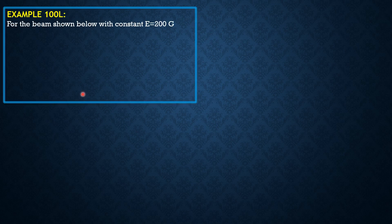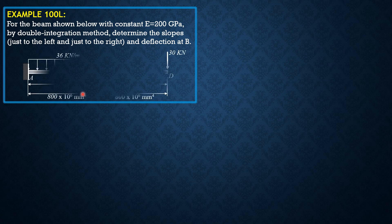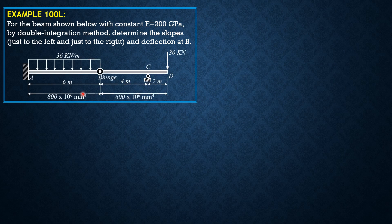For the beam shown below with constant E = 200 gigapascals, by the double integration method, determine the slopes just to the left and just to the right, and the deflection at P.